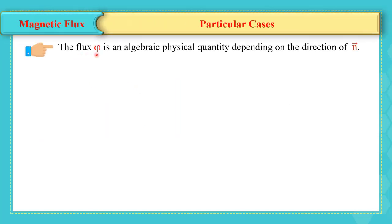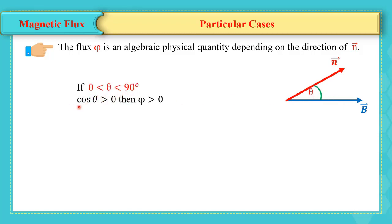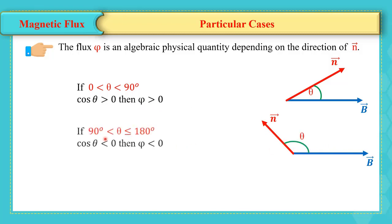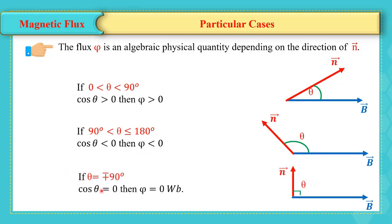Note that flux is an algebraic physical quantity depending on the direction of n. If the angle between n and B is between 0° and 90°, cosine is positive and flux is positive. If the angle is between 90° and 180°, flux is negative. If the angle equals exactly ±90°, then cosine θ = 0 and flux equals zero. Note also that when the positive sense is reversed, the direction of the normal unit vector n reverses too.